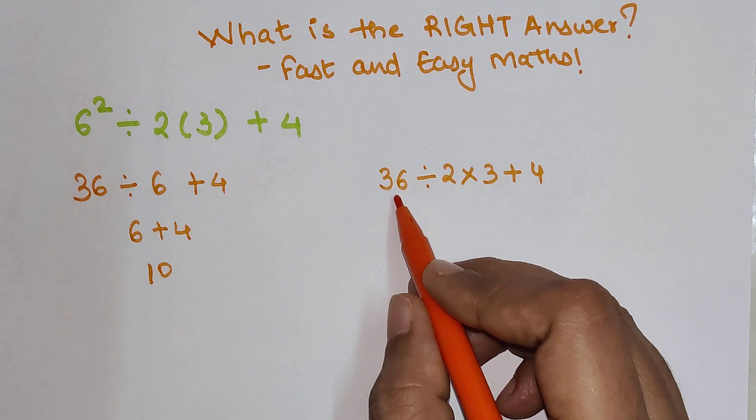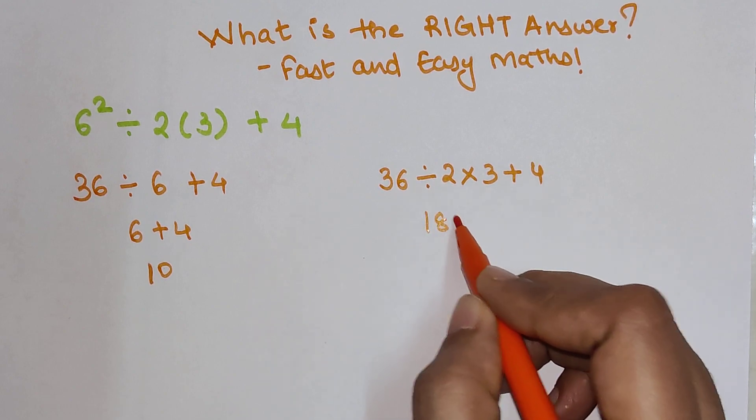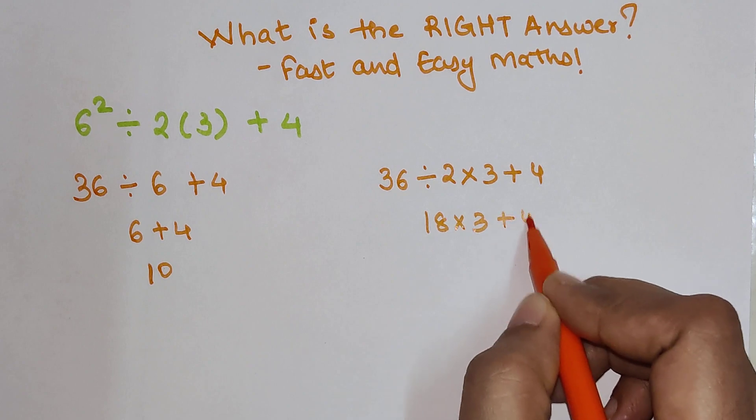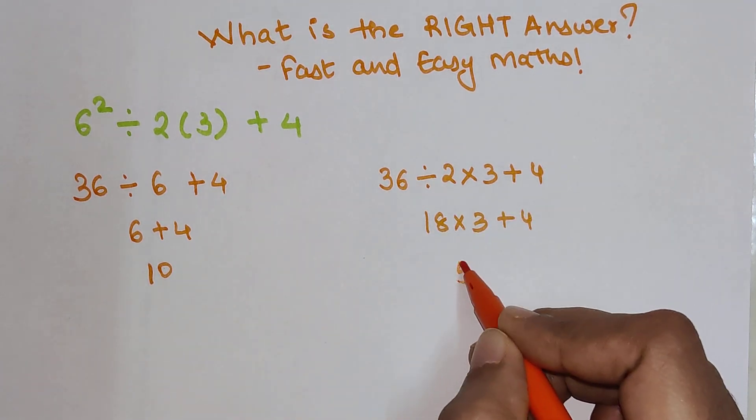So then what we get is 36 divided by 2 gets you 18 into 3 plus 4. 18 into 3 gets you 54. When you add 4 to it, you get 58.